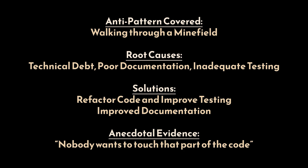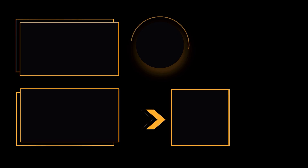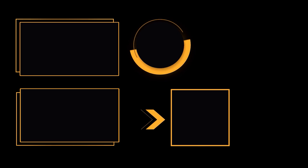By systematically addressing the root causes and implementing best practices, development teams can transform a fragile system into a more robust and reliable one. And that's it for this video — I hope it was helpful. Thank you guys for watching, take care, and I will see you in the next one.